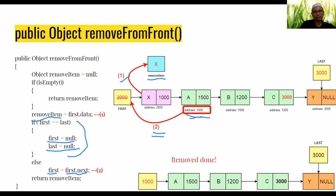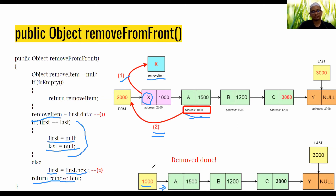We get the address of the second node by accessing first.next, then assign it to first. Now first points to the second node. We do not completely destroy the data — we still return the value X so it can be used in the main method.